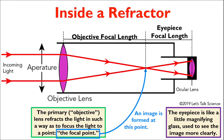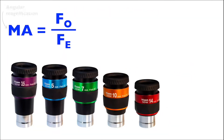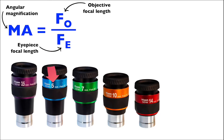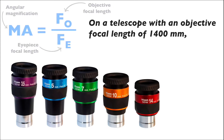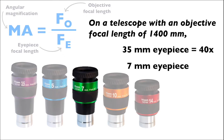Magnification is actually determined by dividing the focal length of the objective lens by the focal length of the eyepiece, which is usually labeled on the eyepiece itself. So if you had a telescope with an objective lens of 1,400 millimeters, attaching a 35 millimeter eyepiece will give you a magnification of 40, but attaching a 7 millimeter eyepiece will increase the magnification by 200 times.